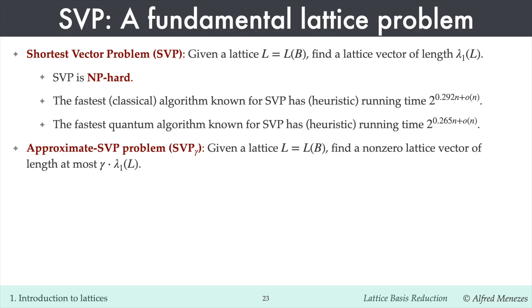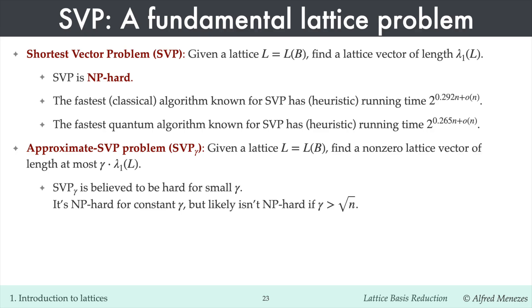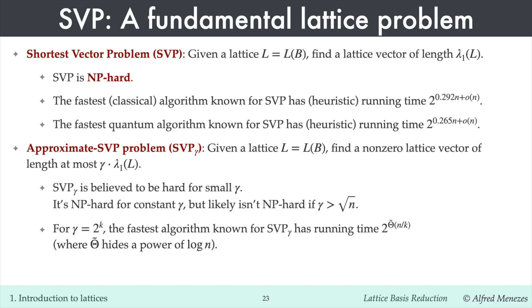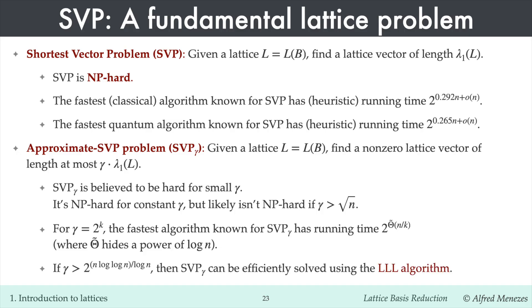A natural relaxation of SVP is approximate SVP, denoted SVP_γ, where the goal is to find a lattice vector whose length is within a factor γ of the length of a shortest non-zero vector. Note that SVP_γ with approximation factor γ=1 is just SVP. SVP_γ is believed to be hard for small γ — indeed, it has been proven NP-hard for constant γ. However, it likely isn't NP-hard if γ is greater than the square root of n. For approximation factor γ = 2^k, the fastest algorithm known for SVP_γ runs in time exponential in n/k. If γ is very large, SVP_γ can be efficiently solved using the LLL algorithm: compute a relatively short lattice basis and take the shortest basis vector.